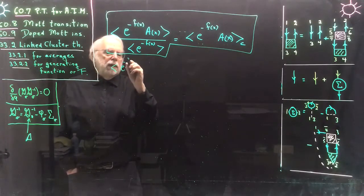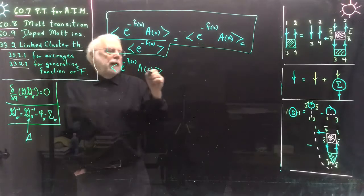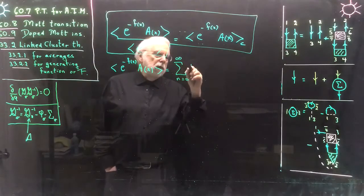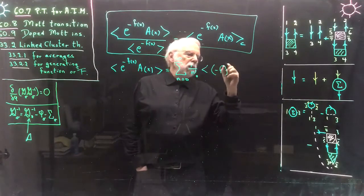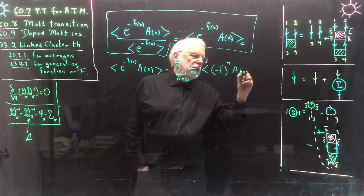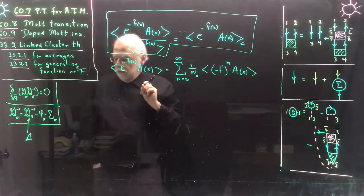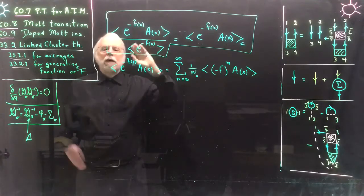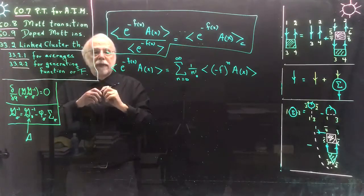Let me start with e to the minus f(x) times c(x). If I expand this, it is just the sum over n equals zero to infinity of one over n factorial times minus f to the power n times c(x). Now you have to think of x as a multivariate variable — it is described by a multivariate probability distribution, so x is like a vector with many components. The result I will show is valid for probability theory in general.